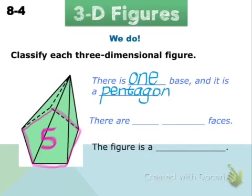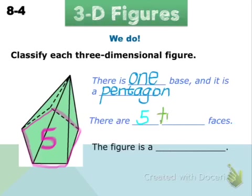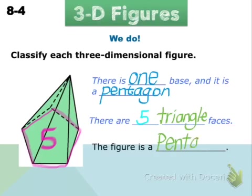Next, look at how many faces there are — one, two, three, four, five. There are five faces and the shape of those faces is triangular. So because we have one base that is a pentagon and triangular faces, the name of our figure is going to be a pentagonal pyramid.